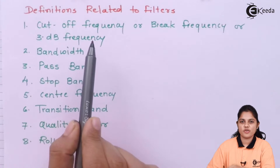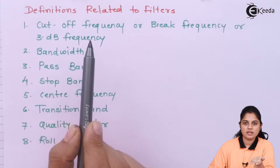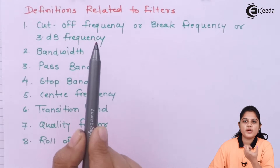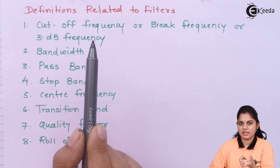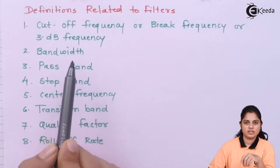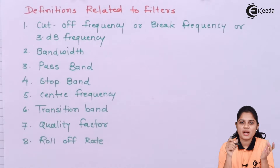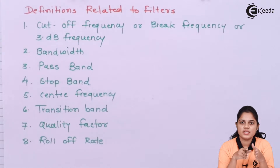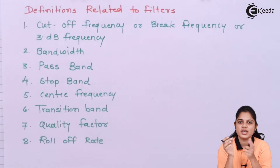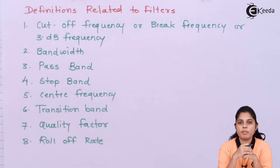Cutoff frequency — for example, if your filter is a low pass filter, then the frequency up to which your filter should pass the signal is decided, and that frequency is known as the cutoff frequency. Second is bandwidth. Now if it is a band pass filter, your filter is allowed to pass frequencies from an x range to a y range, and that particular range is known as bandwidth.